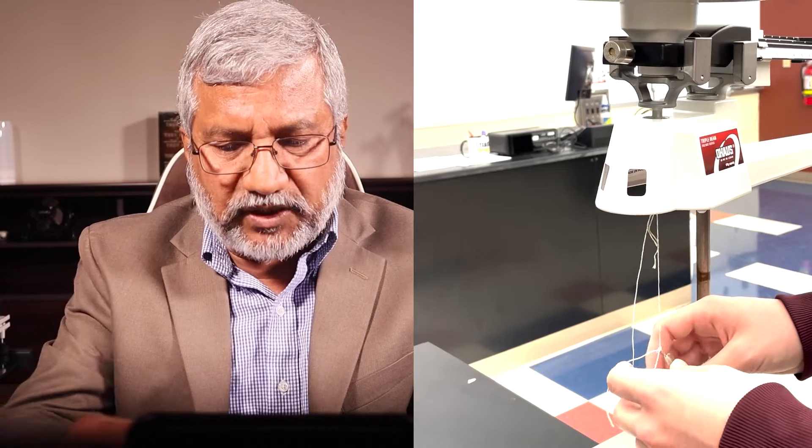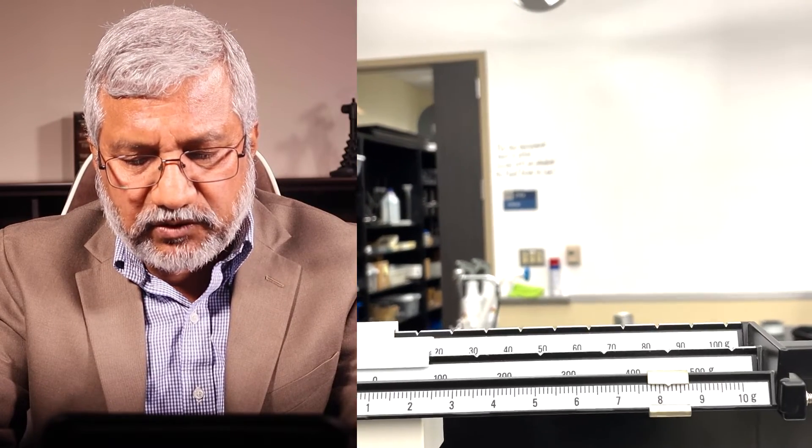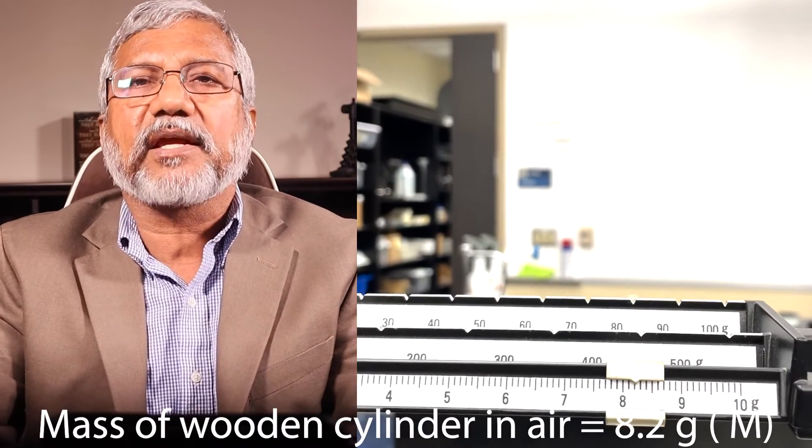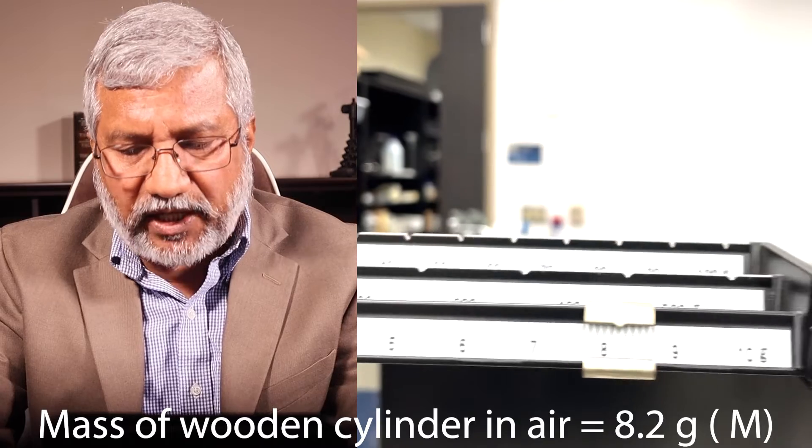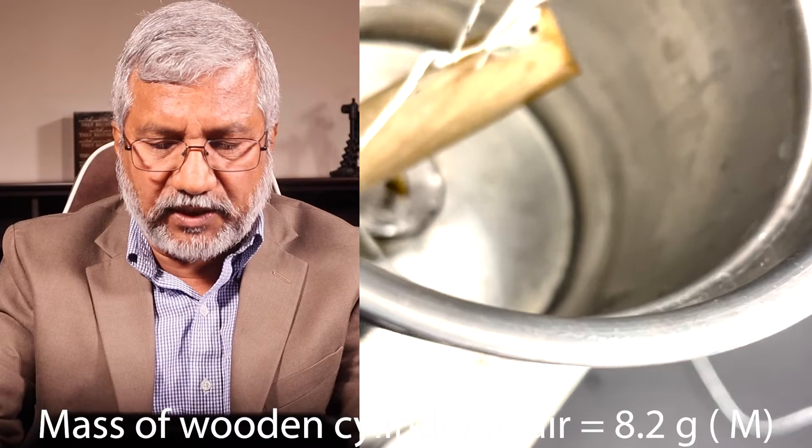Next we got to find the specific gravity or relative density of wood. So that piece of wood is tied by means of a string and its mass is determined in air. What do we have for that? Scale at the back is at zero, the middle one is also at zero, so that's 8.2 grams. Yes, 8.2 grams in air. We got that: 8.2 grams in air.